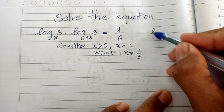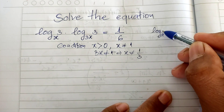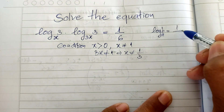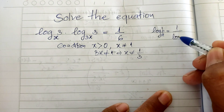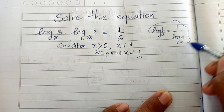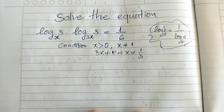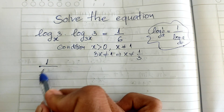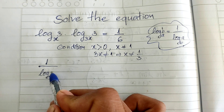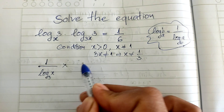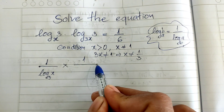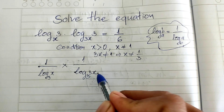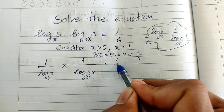Now we can use the rule that log base a of b can be rewritten as 1 divided by log base b of a. I apply this rule, so I get 1 divided by log base 3 of h, multiplied by 1 divided by log base 3 of 3h, equal to 1 divided by 6.